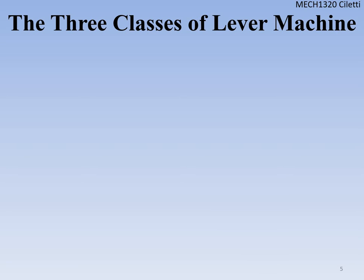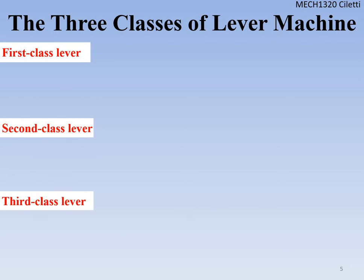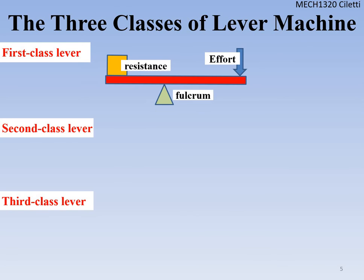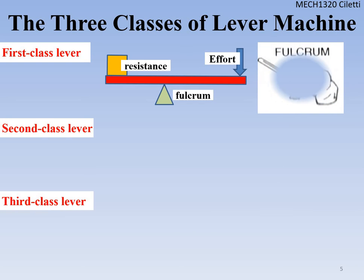Looking more in depth at the lever, there are three different classes. The difference between them is where the fulcrum is — that's our tilting or balancing point, represented by a small triangle. For a first-class lever, think of a pry bar getting a nail out of wood: we have a fulcrum in the middle, a resistance (the load), and an effort force we push down with to gain mechanical advantage.